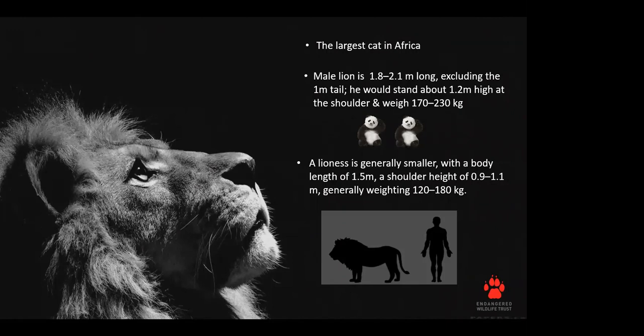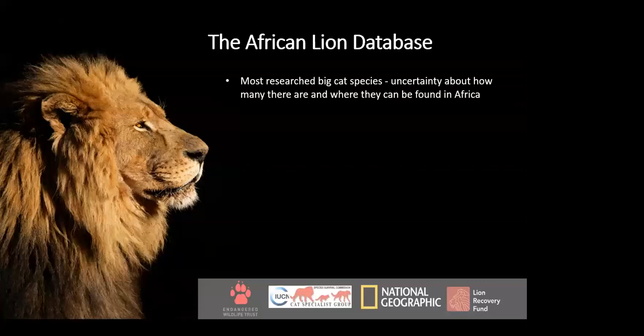The lion is Africa's largest cat. A male lion can be between 1.8 and 2.1 meters long, excluding the one-meter-long tail. He would stand at approximately 1.2 meters high and weigh anywhere between 170 to 230 kilograms — roughly the weight of one-fifth of a small vehicle, or two giant pandas. A female lion is considerably smaller, with a body length of 1.5 meters, a shoulder height of 1.1 meters, and weighing between 120 and 180 kilograms.